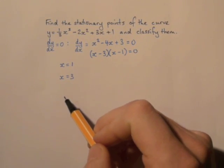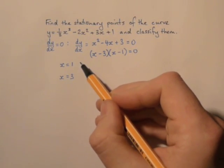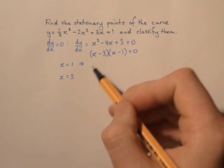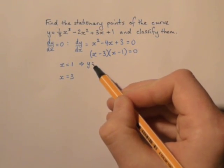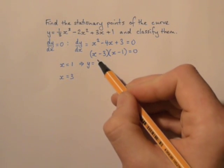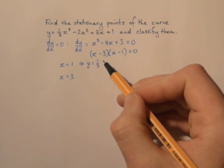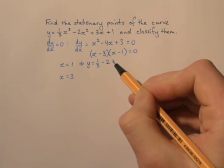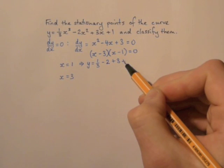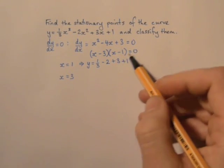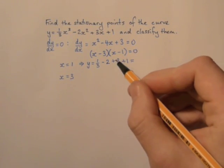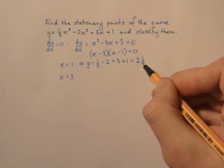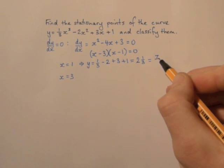Now, that's only half of the coordinates of the stationary points, we also need their y coordinates. So let's substitute x equals one into the original equation for y. So we've got a third times one cubed minus two times one squared plus three times one plus one. And that simplifies to four take away two plus a third, which is two and a third, which we could also write as seven over three.